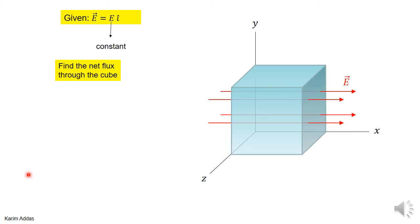This example is one of the simplest examples you can take to practice how to calculate the electric flux through a closed surface. The closed surface we're talking about in this case is a cube, and remember this cube does not exist. It's completely a fictional surface that you put in space to calculate the total electric flux through it. It's a region of empty space, and in this problem there's an electric field given to be in the i direction.